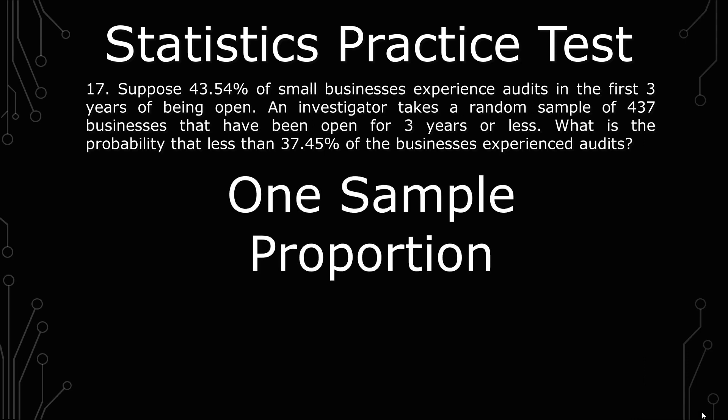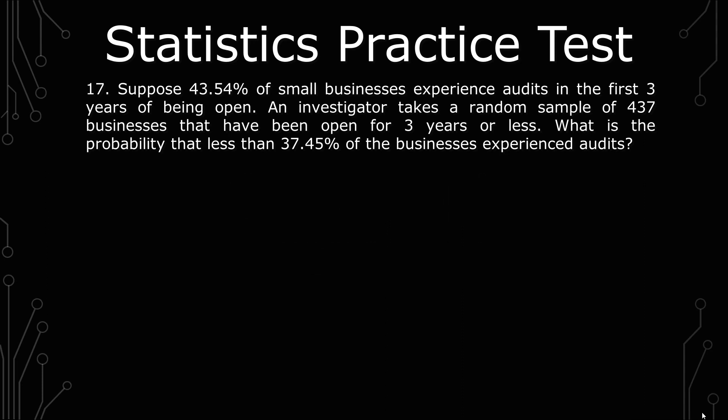This is a one-proportion problem. The reason why I know that is because when it goes to set out a designation — in this case, three years or less — all of the sample is within that designation. Whereas in the binomial approximation we did earlier, it was we're looking for this value compared to all other values.